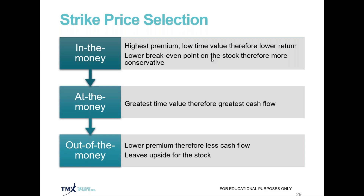You can also use the covered call strategy as a way to get paid to take profits. For example, you may buy a company expecting it to go up over the next couple of months, it goes up and hits your target — maybe a 5% or 7% return. You could then sell a call option against the position and get paid to take profits. You could buy the stock, ride the trend to the upside, recognize the stock may be turning around, and sell an at the money or slightly in the money call option. You can do that on a portion of your position, giving you a lot of flexibility to adapt to your objectives and market conditions.